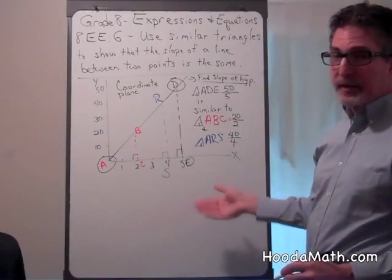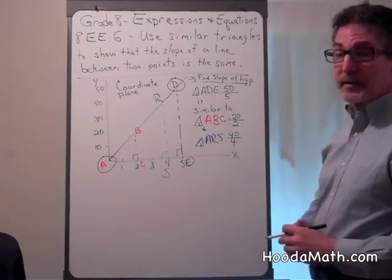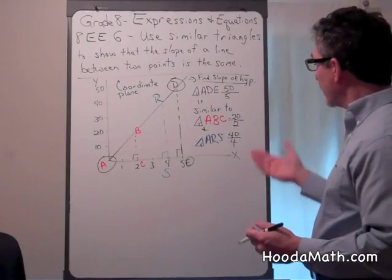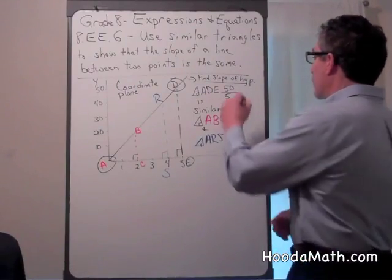If you simplify all these fractions, you'll get the same ratio, which is 10 over 1. So the slope along this line is always the same.